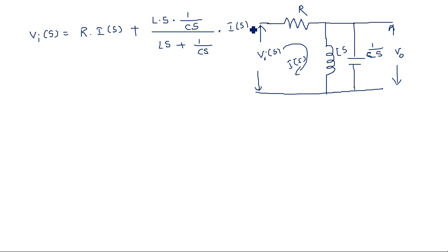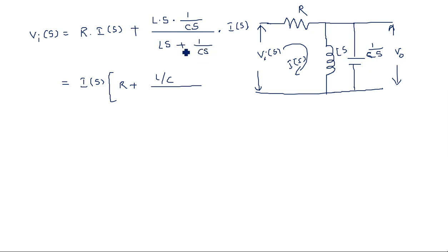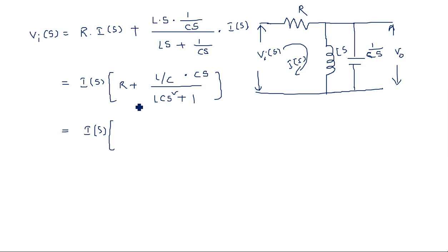For the parallel connection, Ls times 1 over Cs divided by Ls plus 1 over Cs, overall times I of s. Taking I of s common: R plus — in the numerator, Ls multiplied by 1 over Cs, s gets cancelled giving L over C, divided by Ls plus 1 over Cs. Taking LCM, that gives LCs² plus 1 in the denominator with Cs below. After Cs goes to the numerator, C cancels, giving R plus Ls divided by 1 plus LCs².